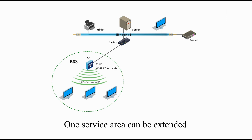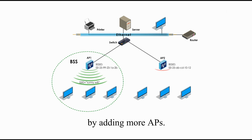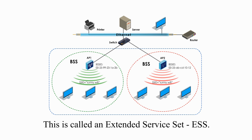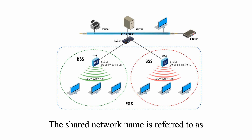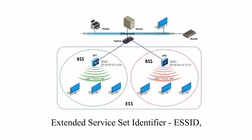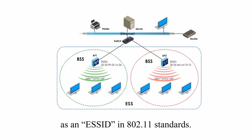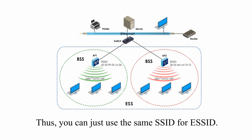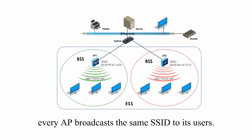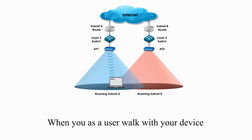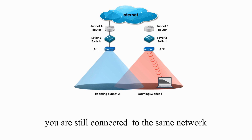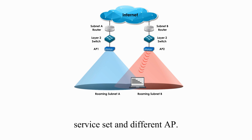One service area can be extended by adding more APs. This is called Extended Service Set, or ESS. The shared network name is referred to as Extended Service Set Identifier, ESSID. But there is formally no such thing as ESSID in the 802.11 standards, so you can just use the same SSID for ESSID. In an Extended Service Set, every AP broadcasts the same SSID to its users. When you walk with your device from one service set to another, you are still connected to the same network without knowing you are using a different service set and different AP.